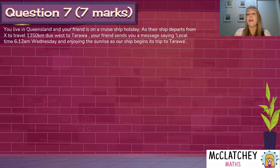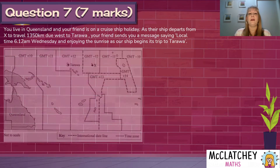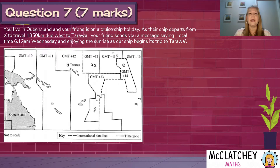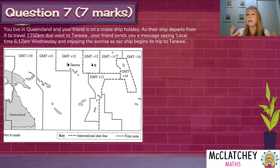You live in Queensland and your friend is on a cruise ship holiday. As the ship departs from position X to travel 1,350 kilometres due west to Tarawa, your friend sends you a message saying: local time 6:12am Wednesday, enjoying the sunrise as our ship begins its trip to Tarawa. We have a map provided in the exam: Queensland is on the far left, Tarawa is the small island they're heading towards, and the cruise ship is currently at position X. It's a confusing-looking map with lots of lines and boxes representing the different time zones — this is a complicated part of the Pacific Ocean where many time zones occur.